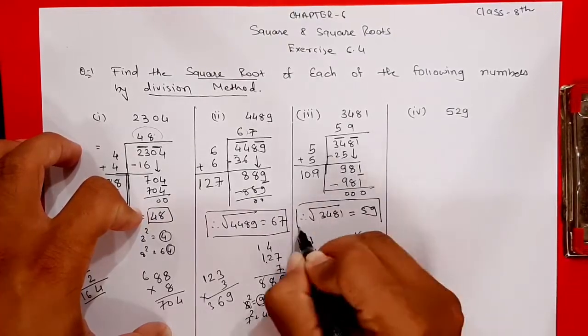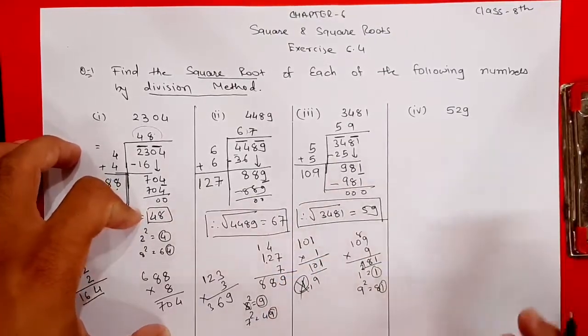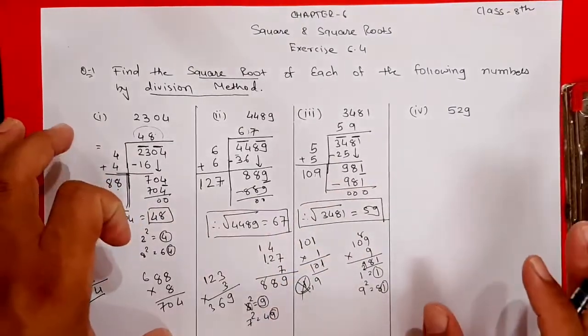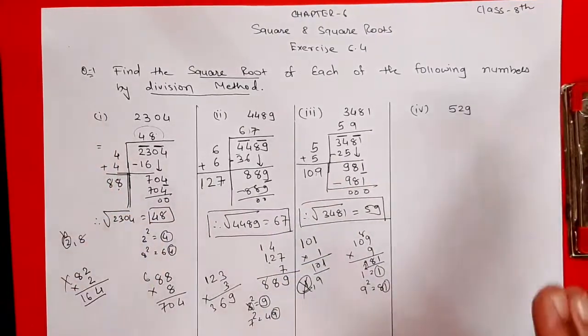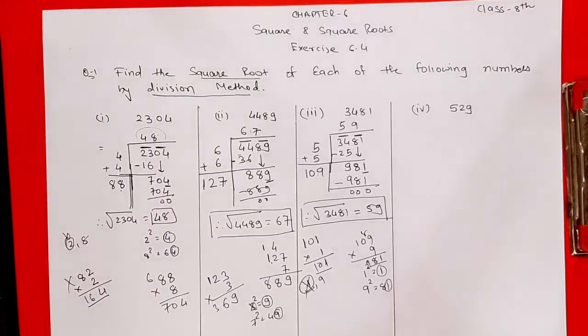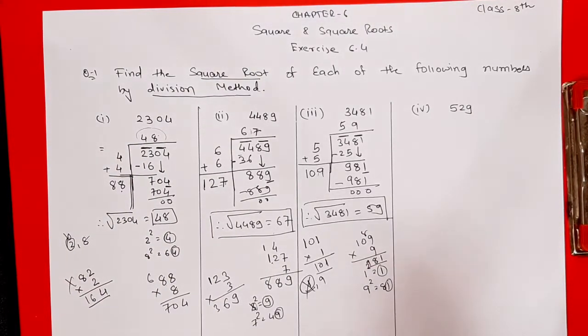Therefore, the square root of 3481 is equal to 59. Clear students, I hope you understood how using the division method we can find the square root of any number.